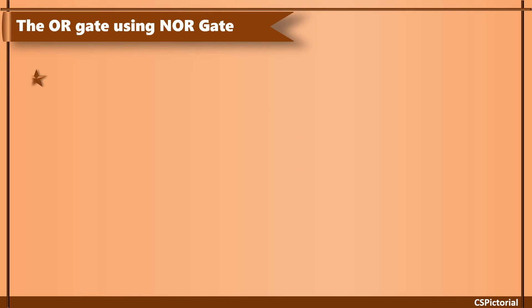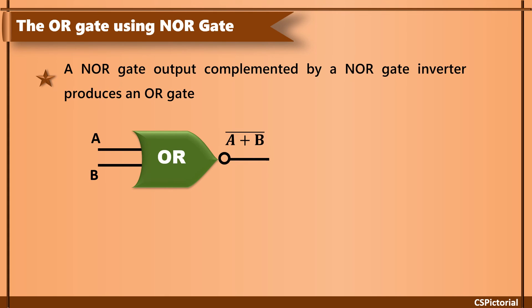The OR gate implementation using NOR gate is done by connecting one NOR gate output A plus B bar to another NOR gate. The output is then A plus B as that of an OR gate.